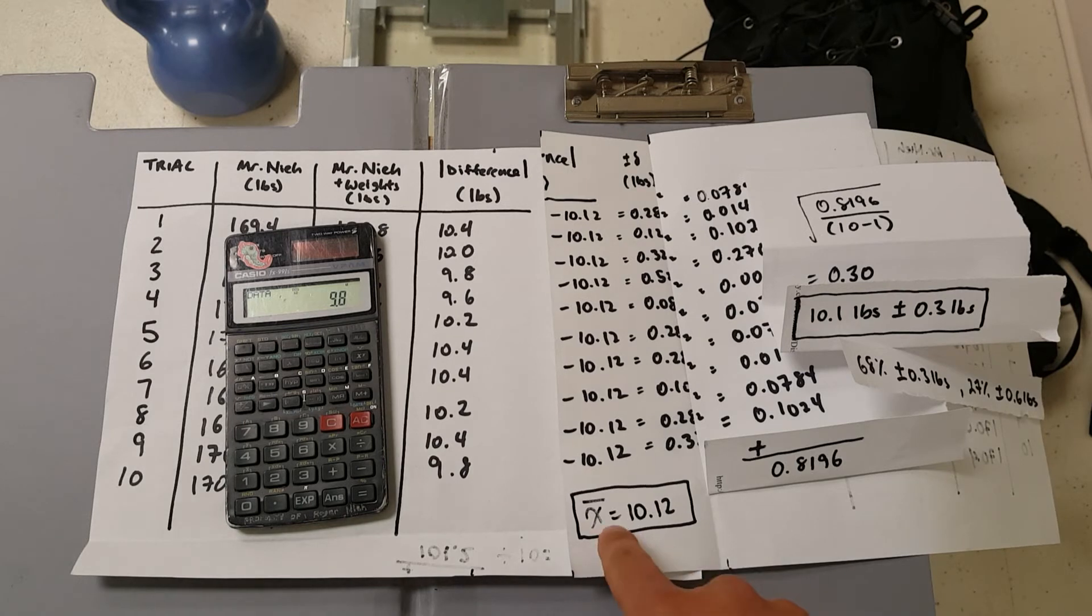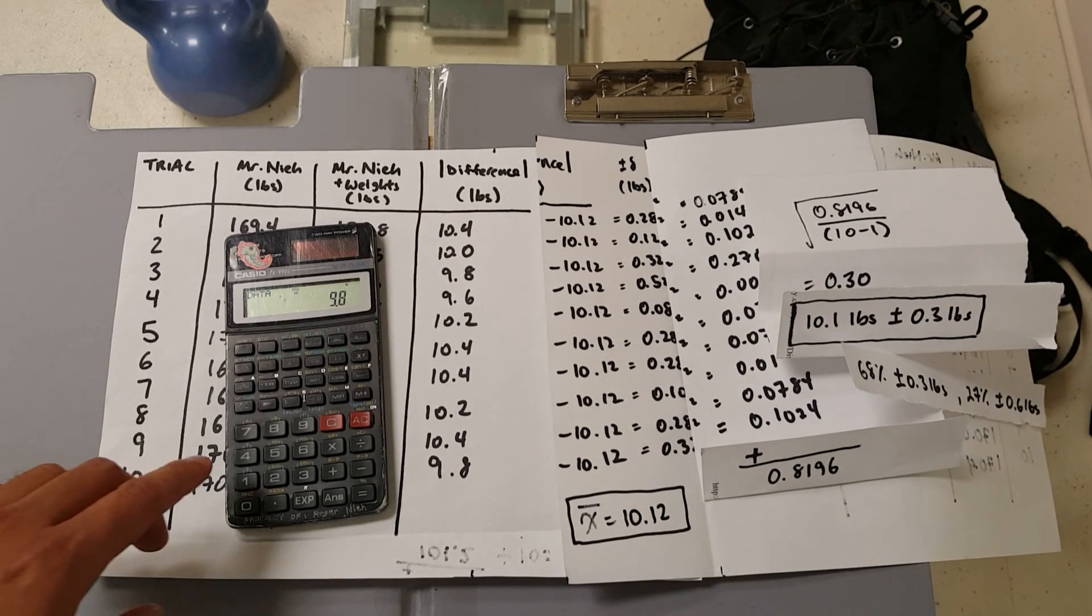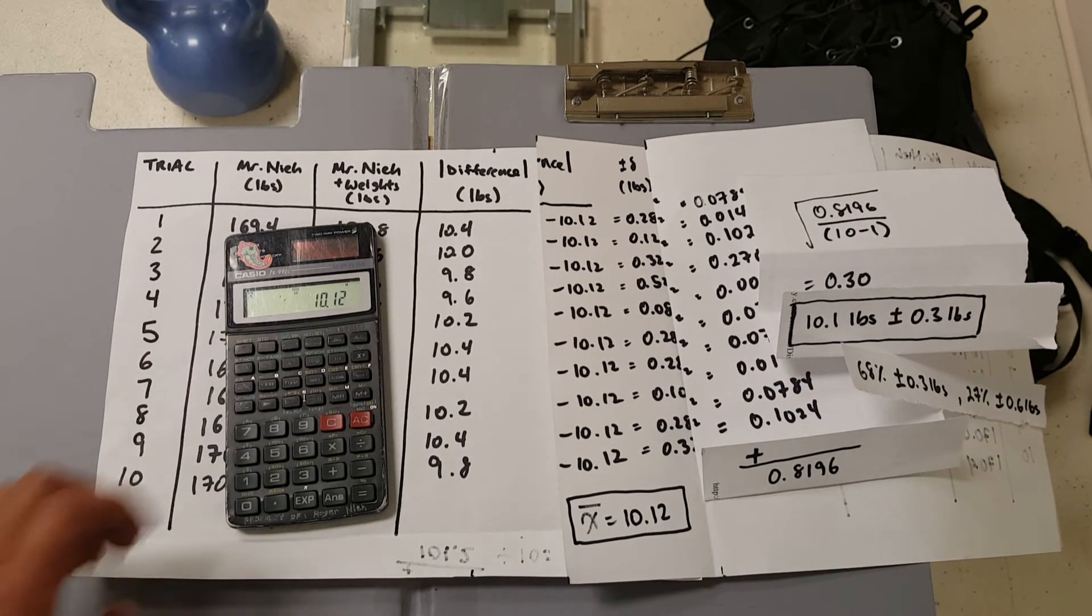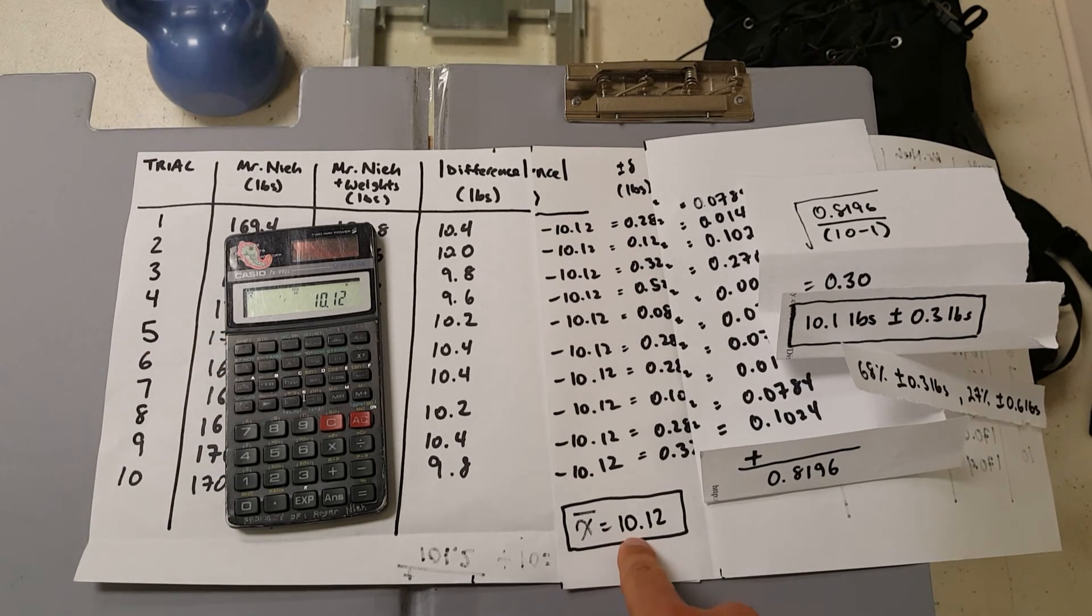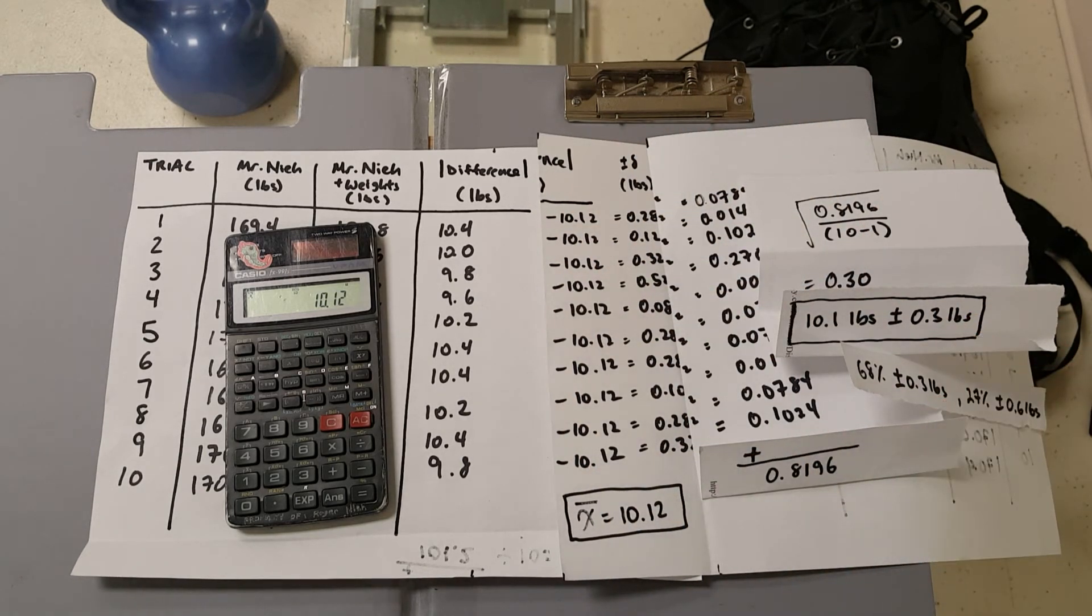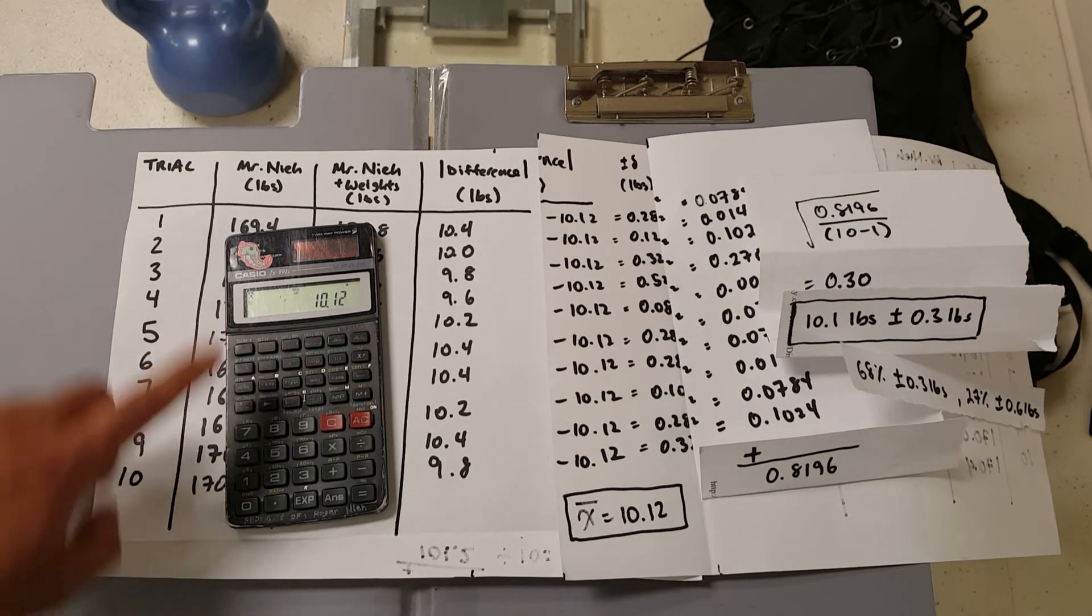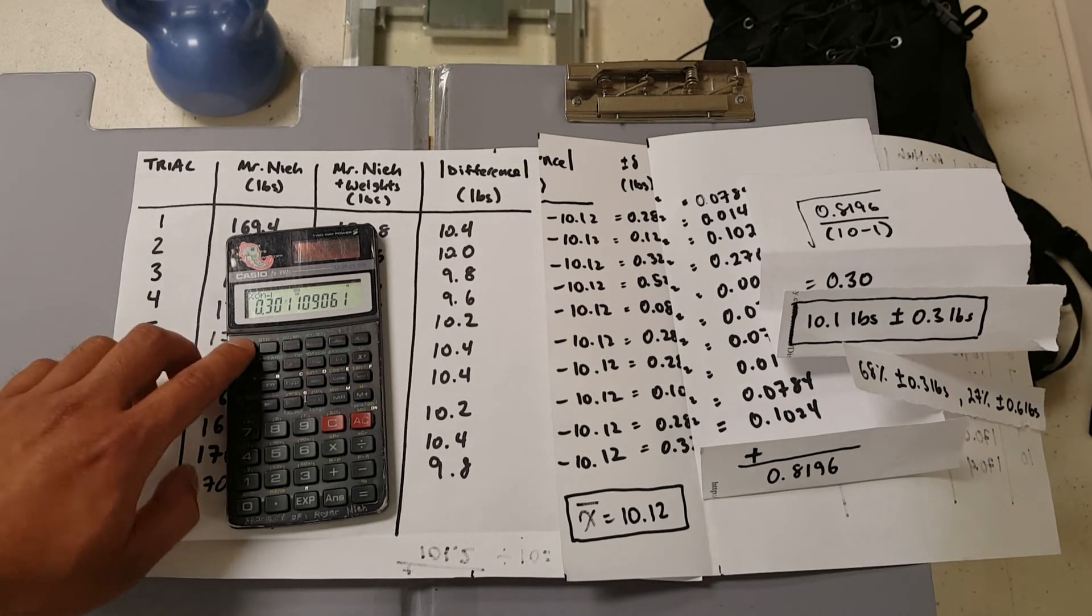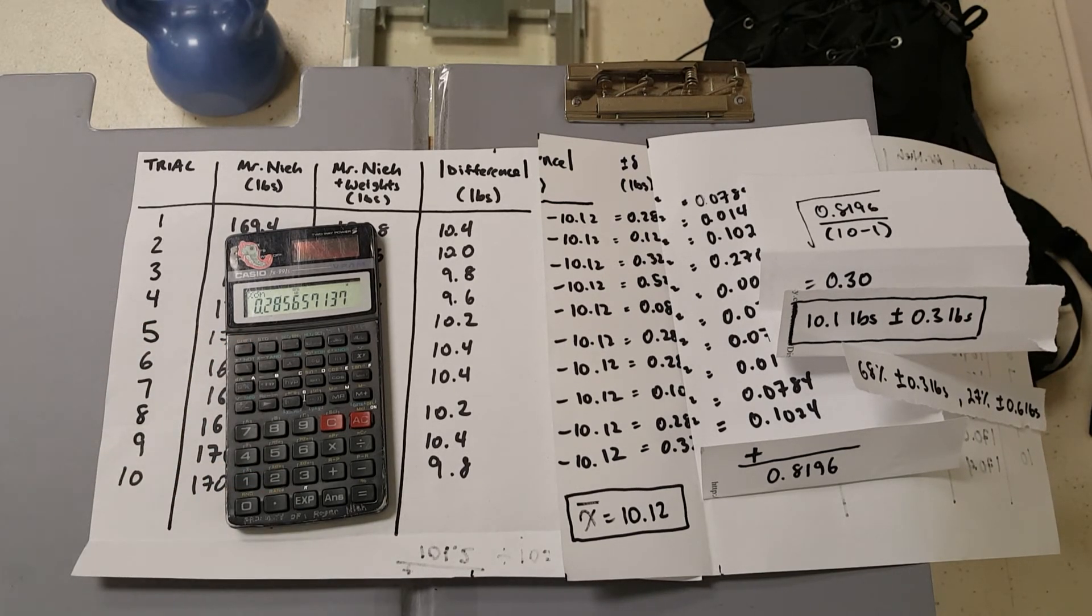In fact, it'll figure out the mean for us. If you look carefully on this calculator, you'll see x with a bar on top. Shift, x with a bar on top, and you get your 10.12. To go through the rest of this crazy math over here, to figure out your estimated standard deviation, you would do shift sigma minus one. And there's your point three zero. And if you wanted your standard deviation, it's just simply shift sigma. And that's how you calculate out your estimated standard deviation or your standard deviation on a scientific calculator. Isn't that much easier?